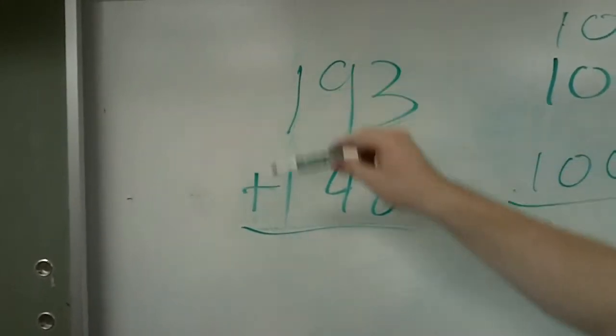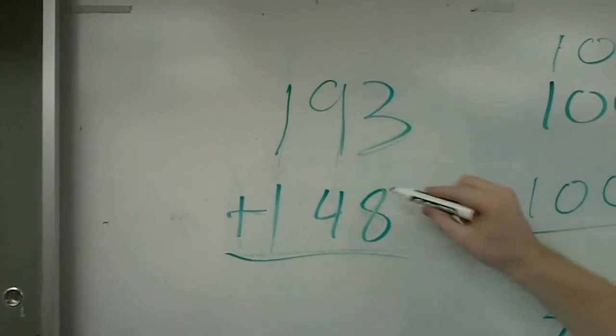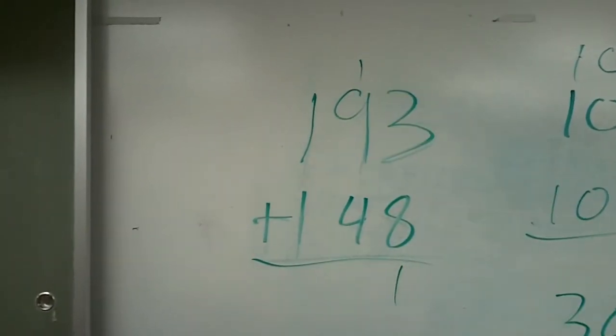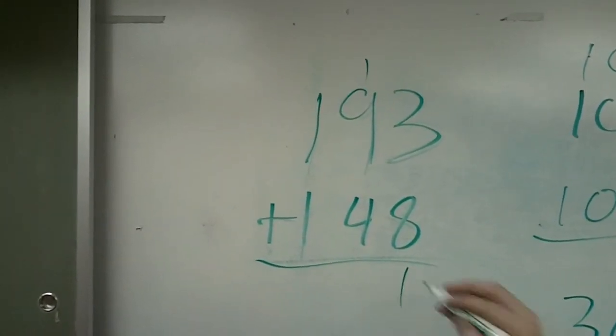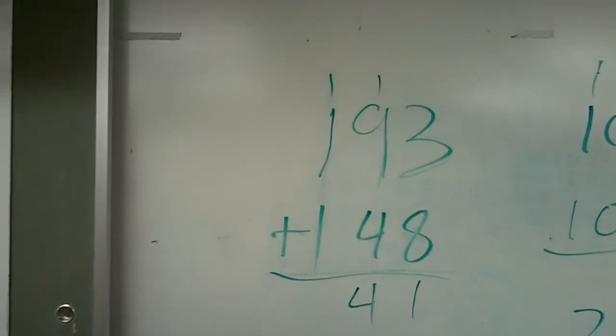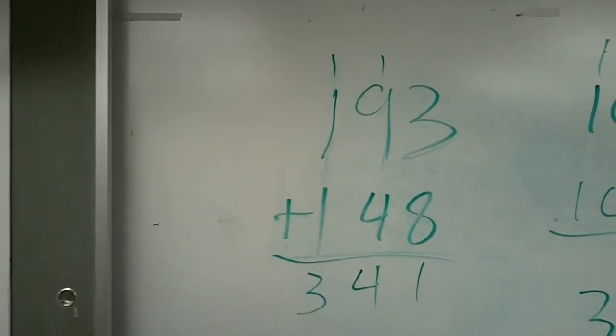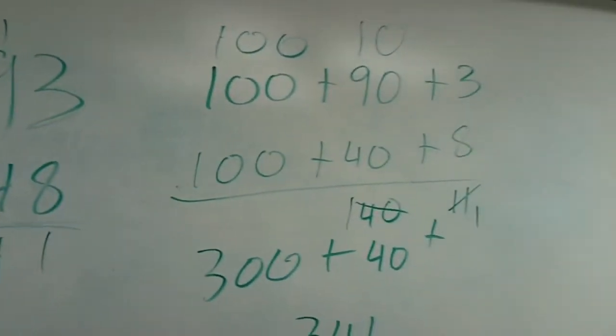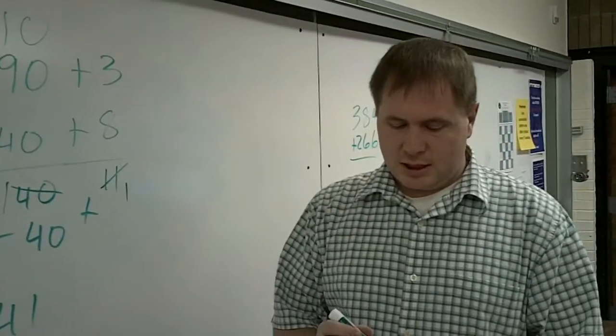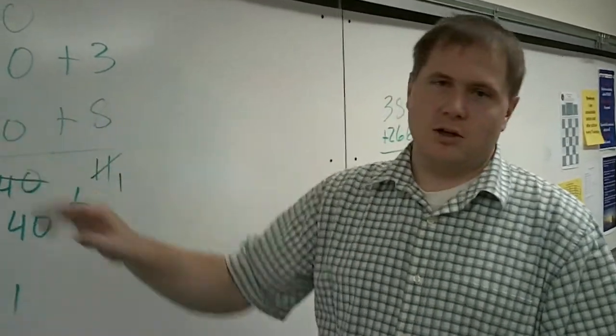And then you can see if we do it the way you've been taught previously, 3 plus 8 is 11, carry the 1. 1 plus 9 plus 4 is 14, carry that 1. Then we get 341. So use this to check your work. See what mistakes you made. Fix them so that you can see what you did wrong.